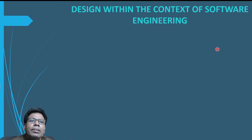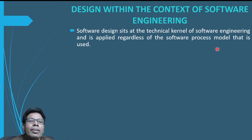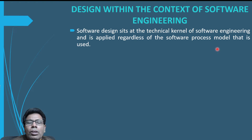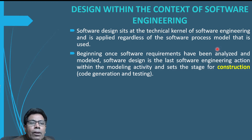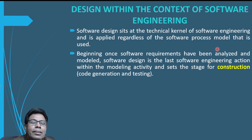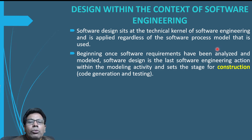Software design is at the technical kernel of software engineering and is applied regardless of the software process model that is used. Once software engineering requirements have been analyzed and modeled, software design is the last software engineering action within the modeling activity, and then there is the stage for construction — that is nothing but code generation and testing. Once we have done with requirement engineering, then we go for the design.